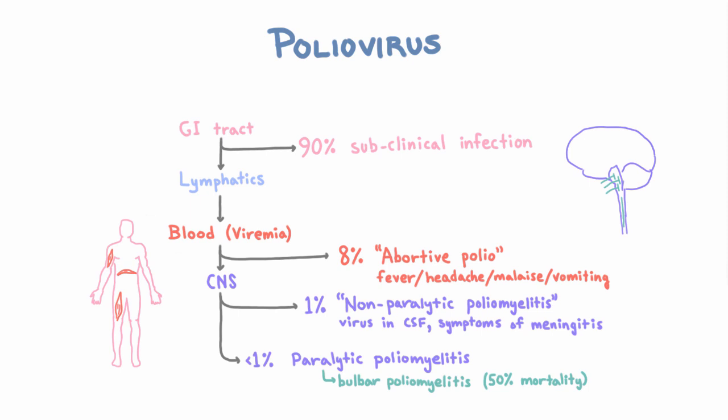So what is the time frame for all this? From the beginning of infection to when you first get the systemic symptoms is about a week, and then from systemic symptoms to neural symptoms is another week.